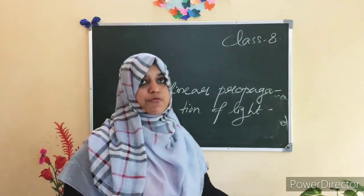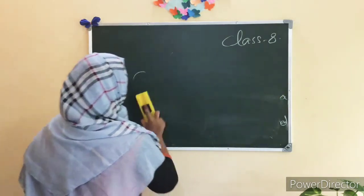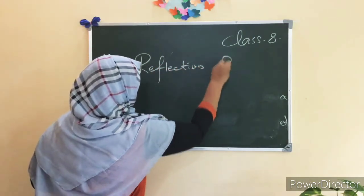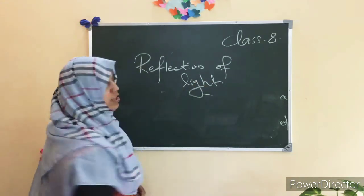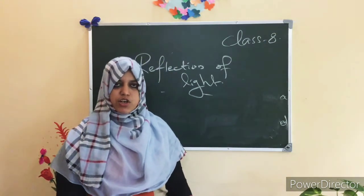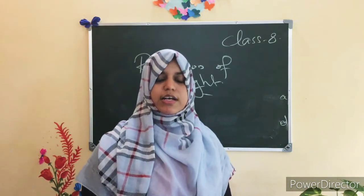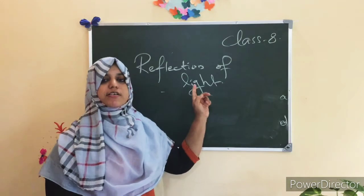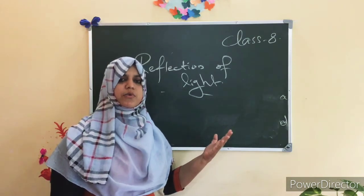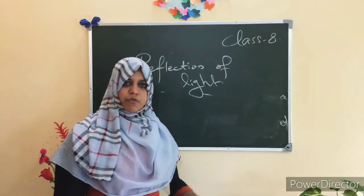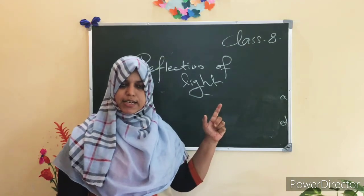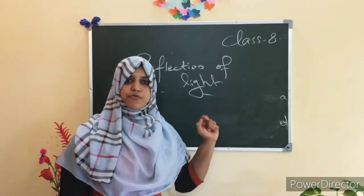Next is reflection of light. This is a very important term related with light. Reflection of light means the process of returning back of light to the same medium after striking the surface is known as reflection of light.